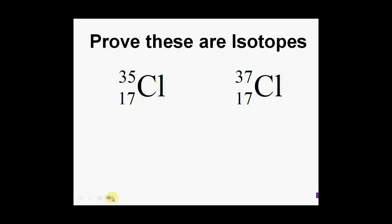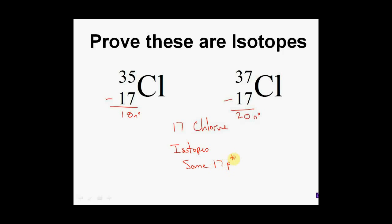How do I know these two are isotopes? Well, the first criteria is they must be the same element. This element is number 17, which is chlorine. Doing a quick subtraction: one has 20 neutrons and the other has 18 neutrons. So you have 17 protons and 18 neutrons versus 17 protons and 20 neutrons. These fit the criteria for isotopes — they have the same 17 protons and a different number of neutrons: 18 and 20.